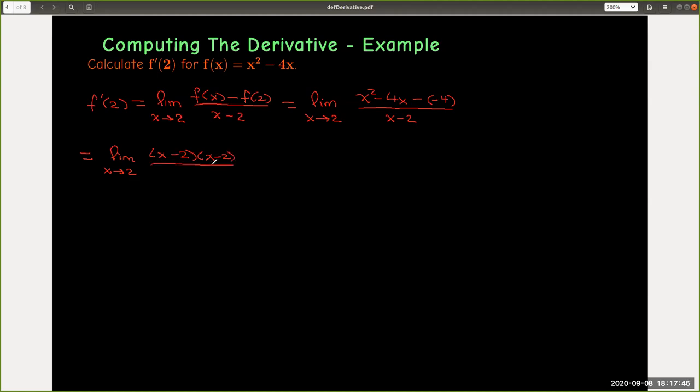The denominator is still (x - 2), so (x - 2) is a common factor. After canceling, I'm left with the limit as x approaches 2 of (x - 2), which is going to be zero.